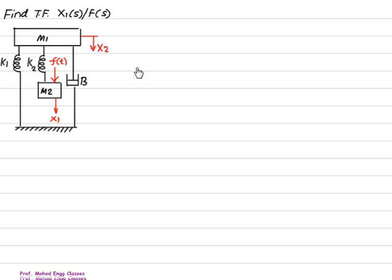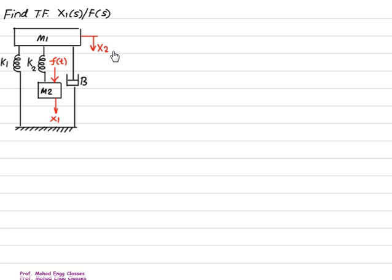One more example: mass m1 and m2. Mass m1 is connected by two springs and one damper — k1, k2, and b. k1 is connected between m1 and ground, so it has a displacement of x2 and ground. k2 is connected between m1 and m2, so it has a displacement of x2 and x1. The damper b is connected between x2 and ground, so one displacement is x2 and the other is ground.